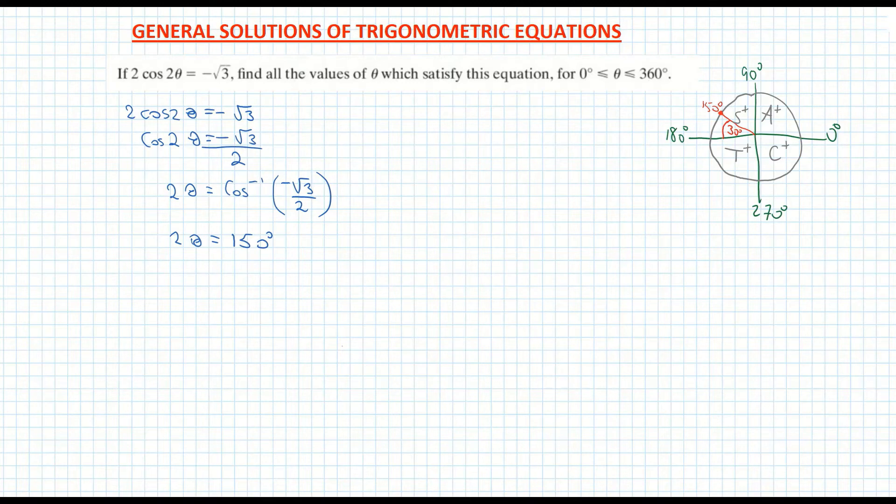Now I'm going to look at where else on my unit circle that cos is negative. The only other location that cos is negative is in quadrant 3. So I'm going to mark in my reference angle here once again and I'm going to put in my 30 degrees. And I'm going to mark my full angle here and it'll be 180 plus 30 which is 210 degrees.